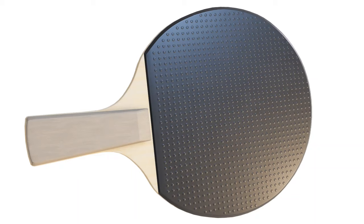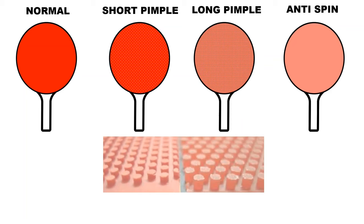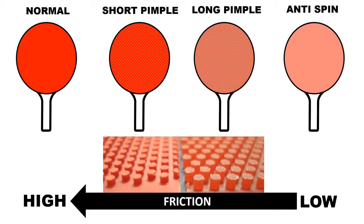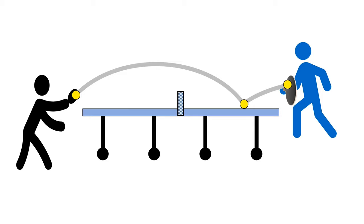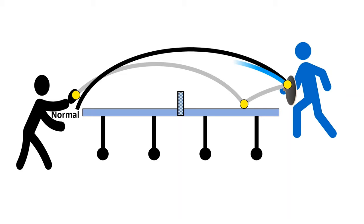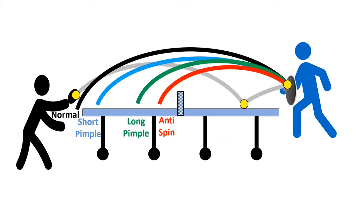The racket's rubber is very important. There are four main types: normal, short pimple, long pimple, and anti-spin. The difference is friction — anti-spin has minimal friction, normal has very high friction, and short and long pimple are in between. With a normal bat you can spin the ball much more than with anti-spin. Depending on your opponent's bat type, a topspin shot can land at completely different locations.